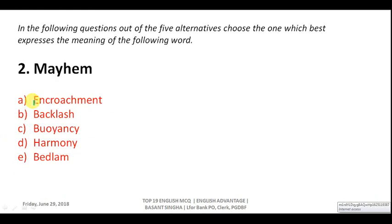Question two: 'mayhem' is a very common and important word for banking exams. Mayhem means chaos, tumult, or noise. The equivalent word is 'bedlam,' which also means a kind of noise or chaos. Buoyancy means cheerfulness, encroachment means illegal entry, and backlash means negative reaction. Correct answer is E — bedlam.